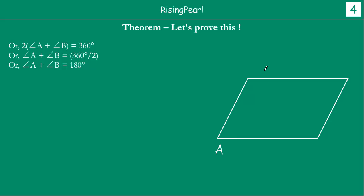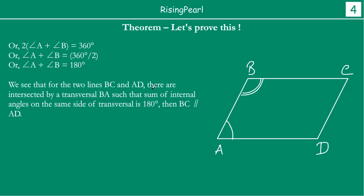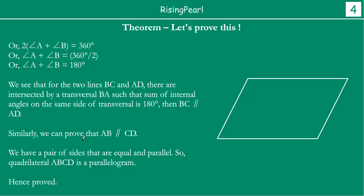Now we are seeing that angle A + angle B = 180 degrees. For two lines BC and AD intersected by transversal BA, the sum of internal angles on the same side of the transversal is 180 degrees. This implies BC is parallel to AD, because this is a theorem from lines and angles. Similarly, we can show that AB is parallel to CD. So we have BC parallel to AD and AB parallel to CD — both pairs of opposite sides are parallel.